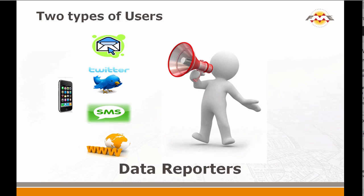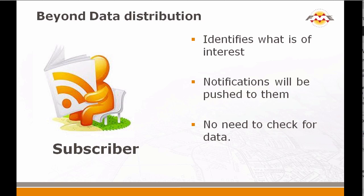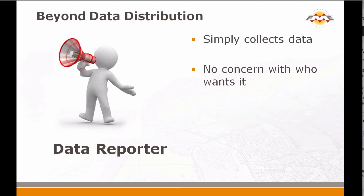The second type is the data reporter. They may report data with email, using their smartphone, Twitter, SMS, or a web app. The data reporter could be a sensor — in many cases it's not a clear person out in the field. They could be a sensor, a reporter, and a subscriber, basically collaborating, consuming data, sharing data in an environment like that. If you look at data distribution, users would now identify what they're interested in. From a data provider standpoint, this is huge because in the past all you could do is look at historical data requests. History is the best indicator of what people want, but it's not always the best. The reporter simply collects data with no concern for who wants it.